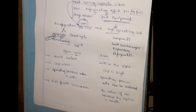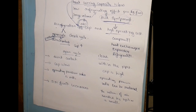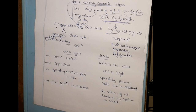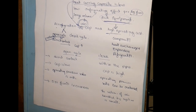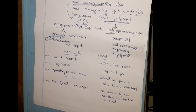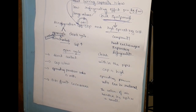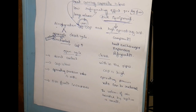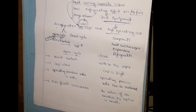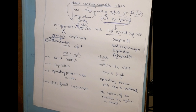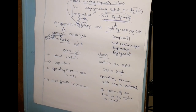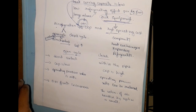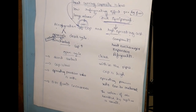In the closed cycle, the air is circulated within pipes and does not come in direct contact with the refrigerated space. A heat exchanger is used in this system. One difference between open and closed cycle is the air flow arrangement.